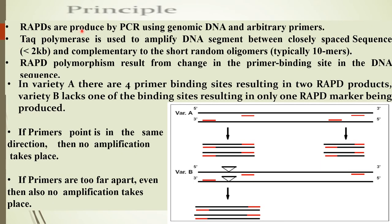Principles of RAPD. RAPDs are produced by PCR using genomic DNA and an arbitrary primer. Taq polymerase is used to amplify DNA segments between closely spaced sequences complementary to short random oligomers, typically 10-mers. In case of RAPD, the polymorphism results from changes in the primer binding site in the DNA sequence.